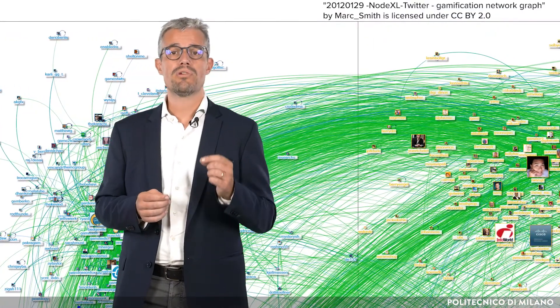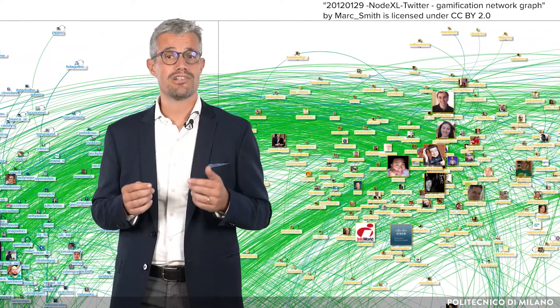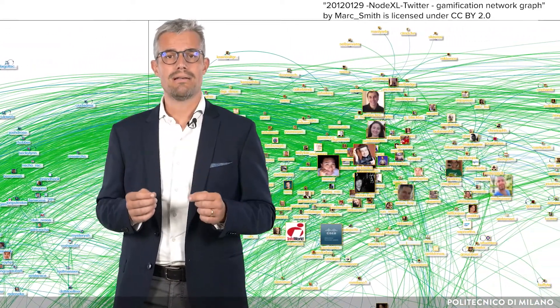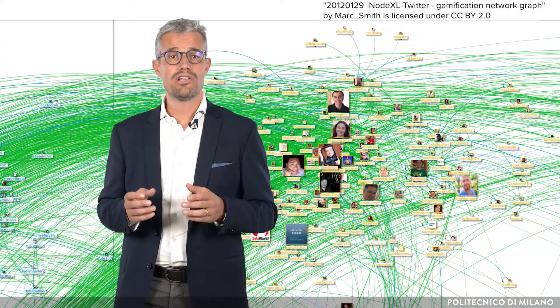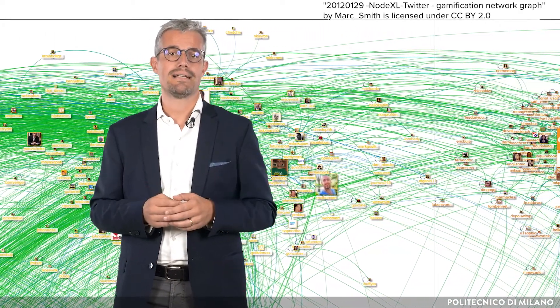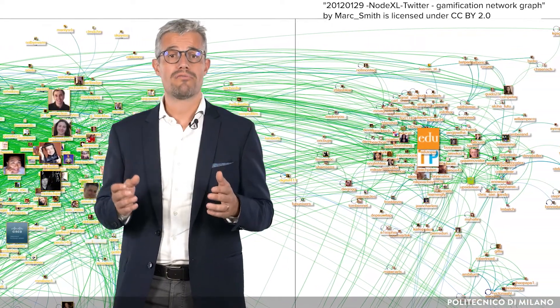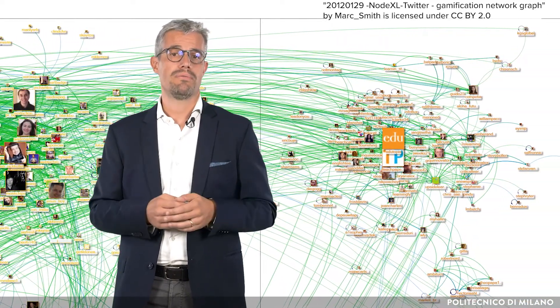The Twitter Political Index, presented during the 2012 US presidential election, is one example of the potential for Twitter's data stream to support powerful insights. In this way, the company created a new and powerful revenue stream. Google, Facebook, and many others have experimented with similar approaches, capturing economic value from the data generated by users.